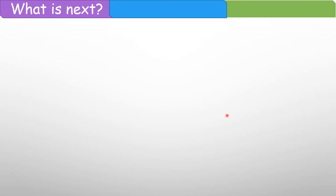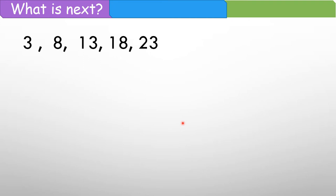Now, this one. We have here 3, 8, 13, 18, 23. So ano kaya ang sunod? Kung titignan mo, from 3 nagiging 8, and then nagiging 13, 18, 23. So ang dinagdag lang dito is 5. So kung dadagdagan natin ng 5, that would be 28.